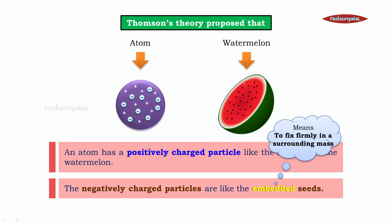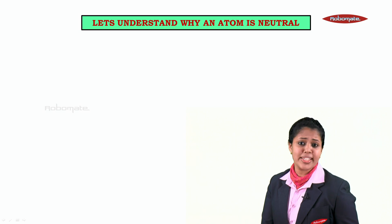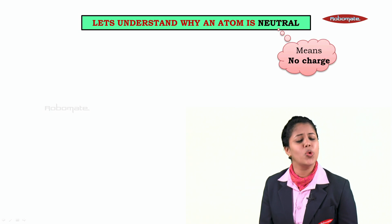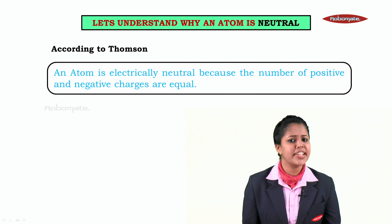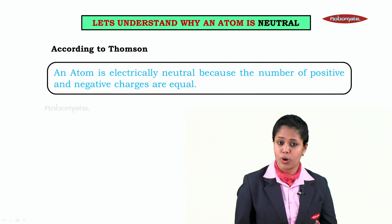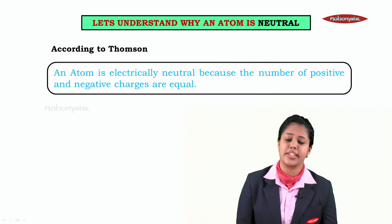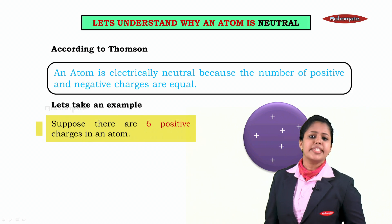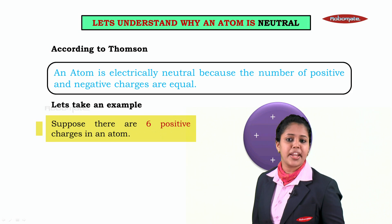Embedded means to fix firmly in a surrounding mass. Here, Thompson is telling us that the electrons are fixed firmly in an atom like the seeds of a watermelon. So according to Thompson, positive charge is like the red edible part and the negative charge is like the black seeds. An atom is electrically neutral because the number of positive and negative charges are equal.